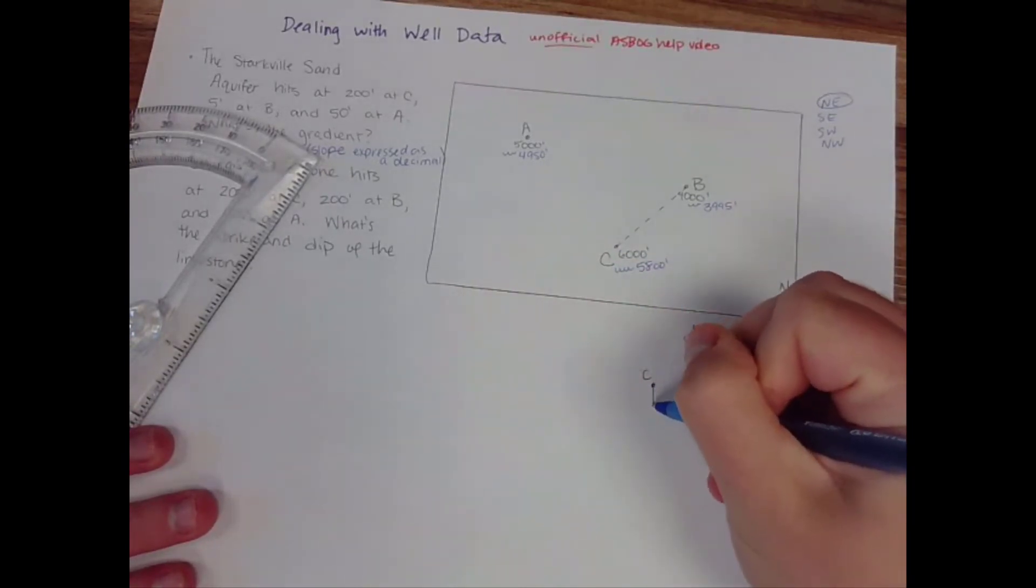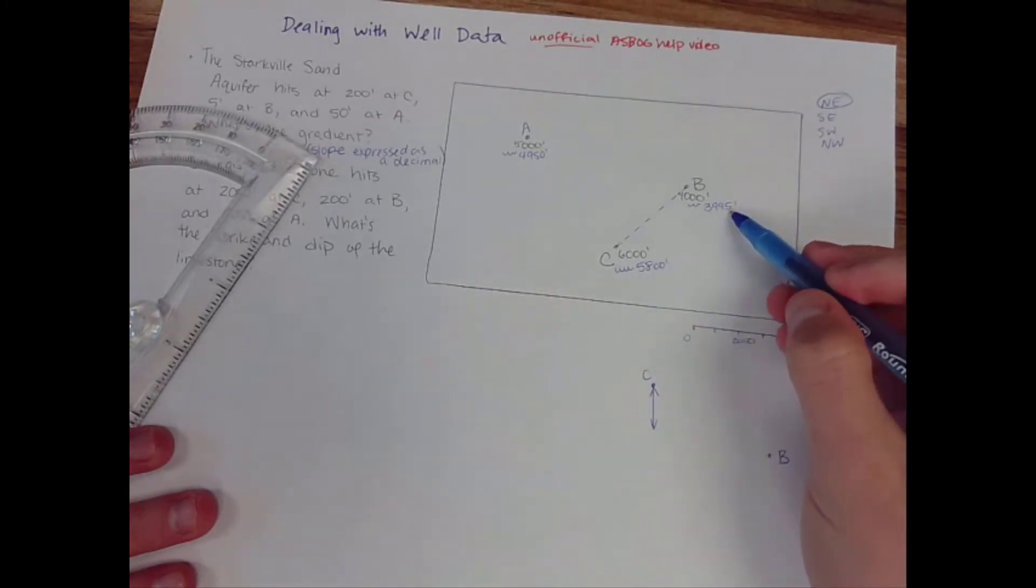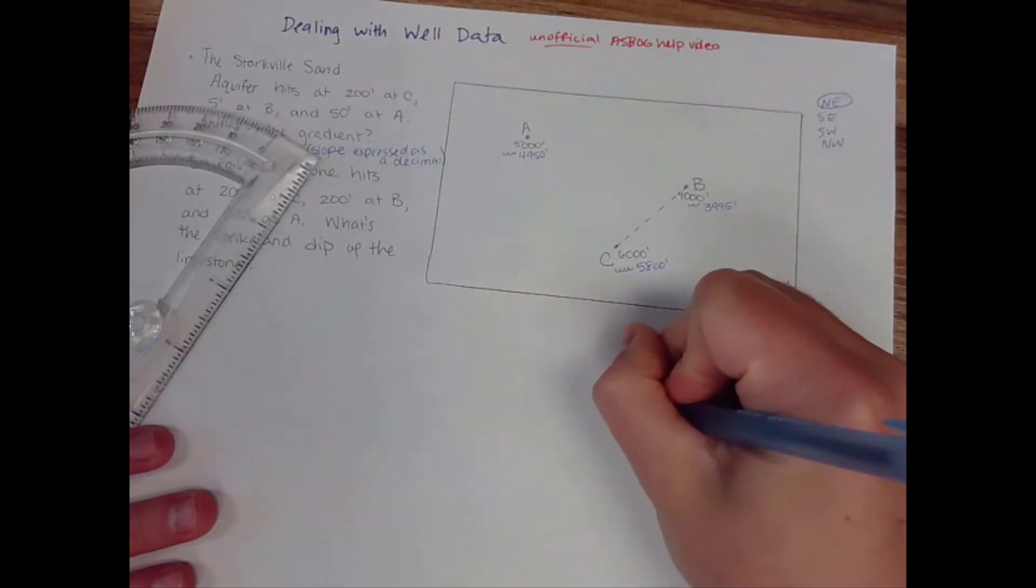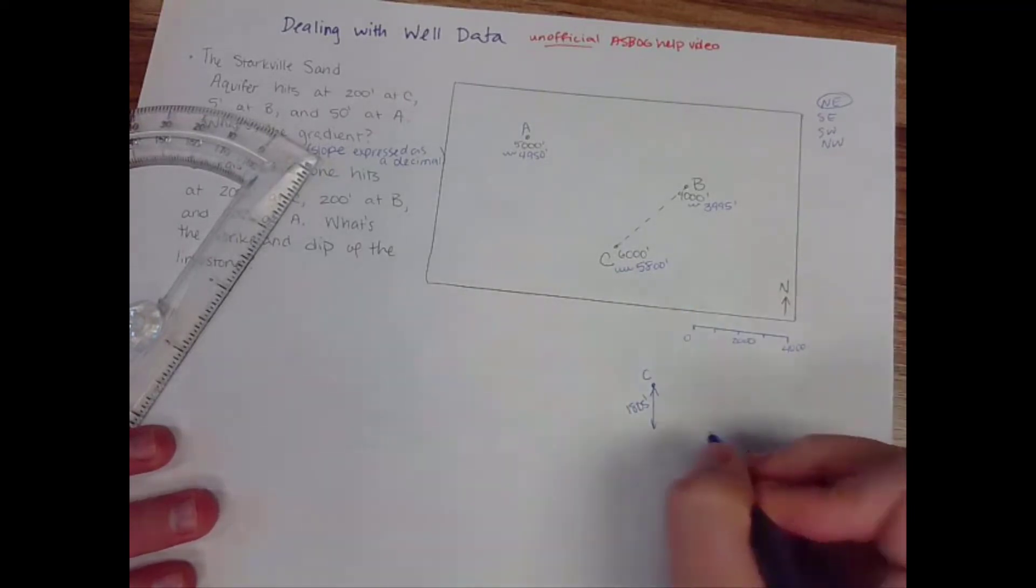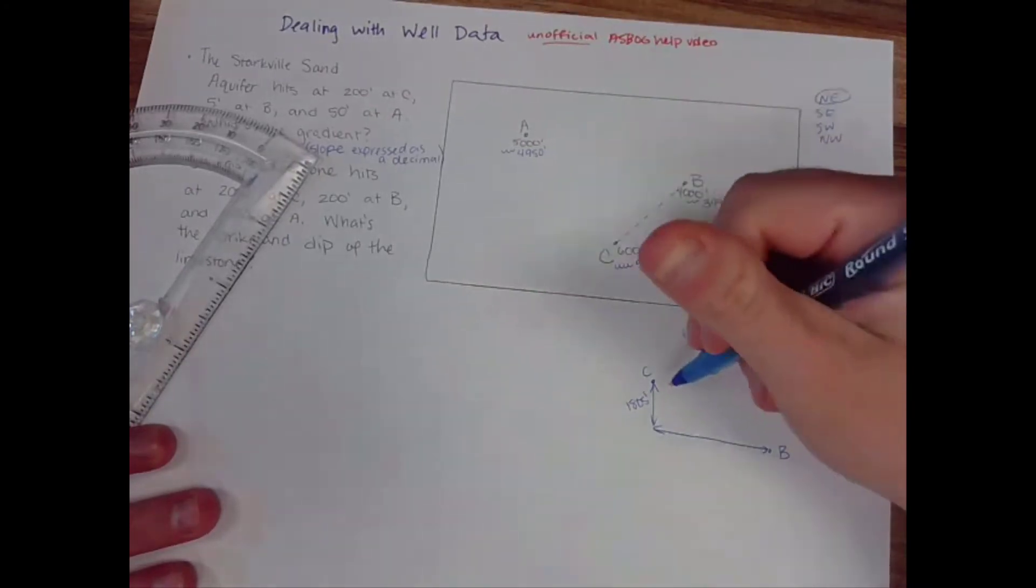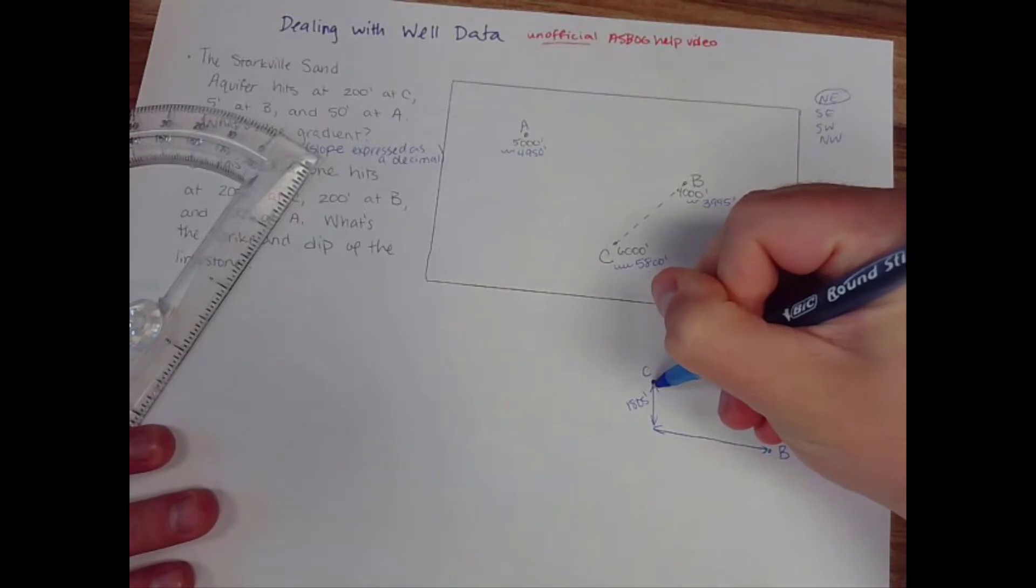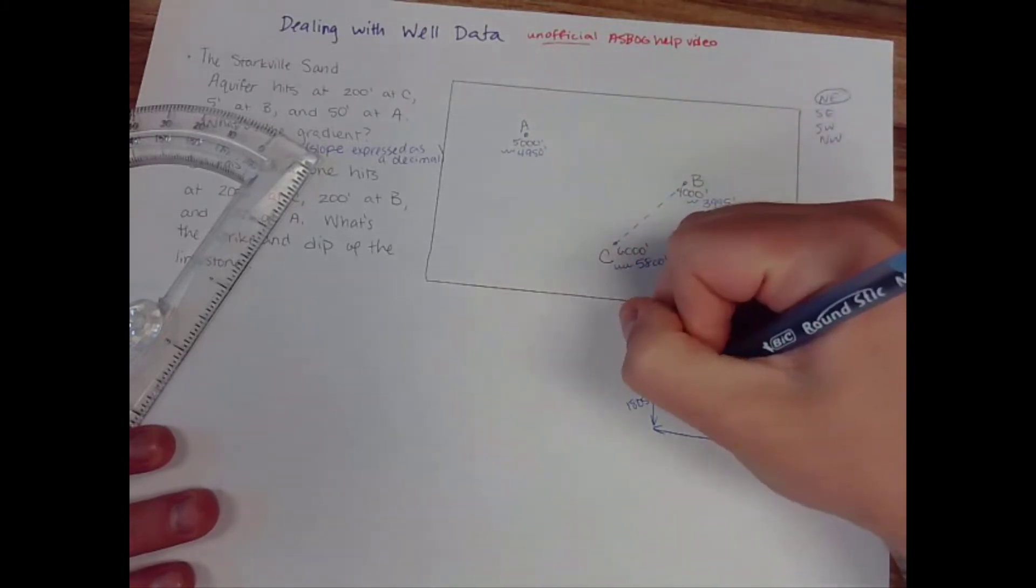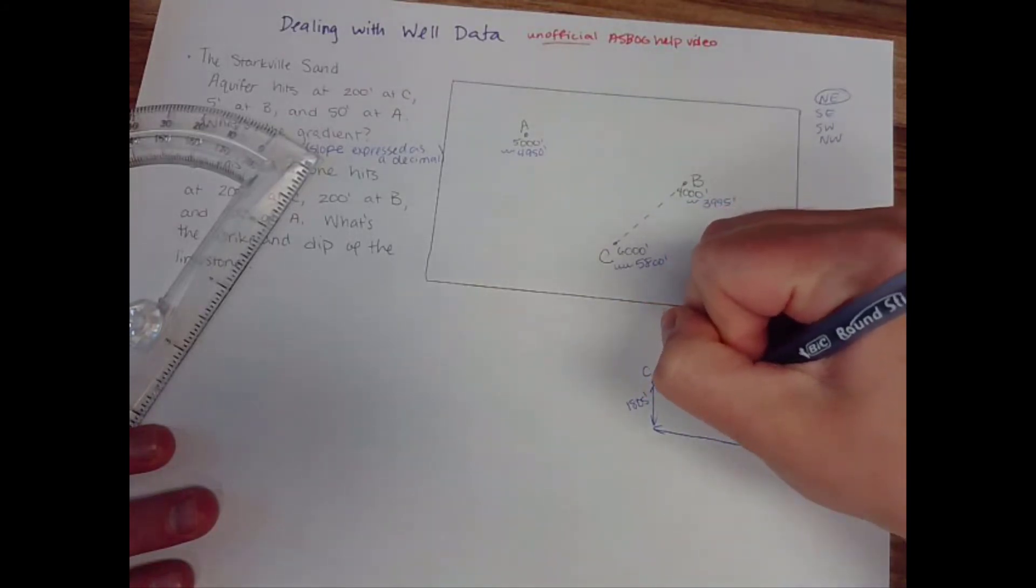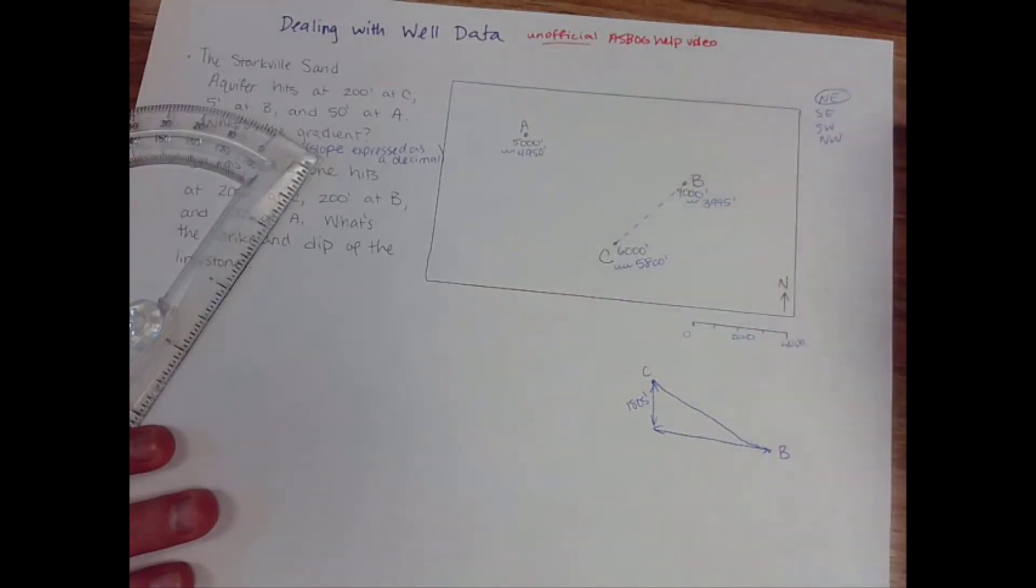there's some vertical distance between the two which would be 5,800 minus 3,995, just 1,805 feet and there's also some horizontal distance between the two. Somewhere along this line this point at A that 4,950 is going to plot but we don't know where that is yet and this is the actual slope of the aquifer between those two points.